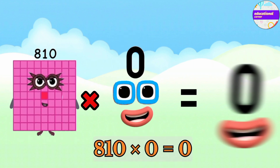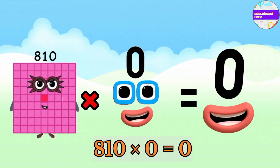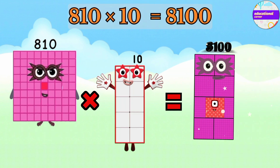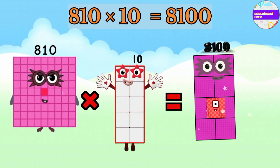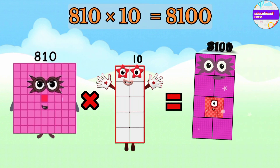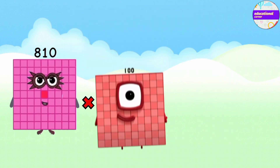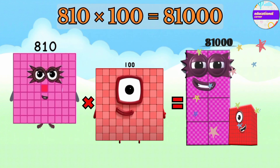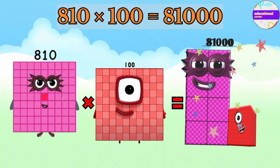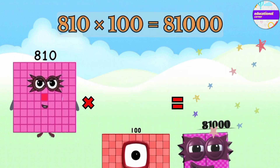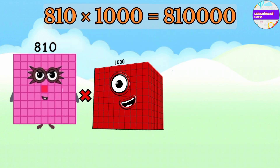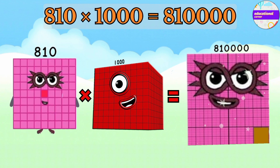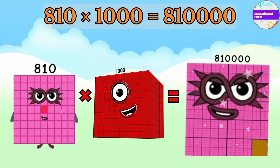810 x 0 equals 0. 810 x 10 equals 8,100. 810 x 100 equals 81,000. 810 x 1,000 equals 810,000.